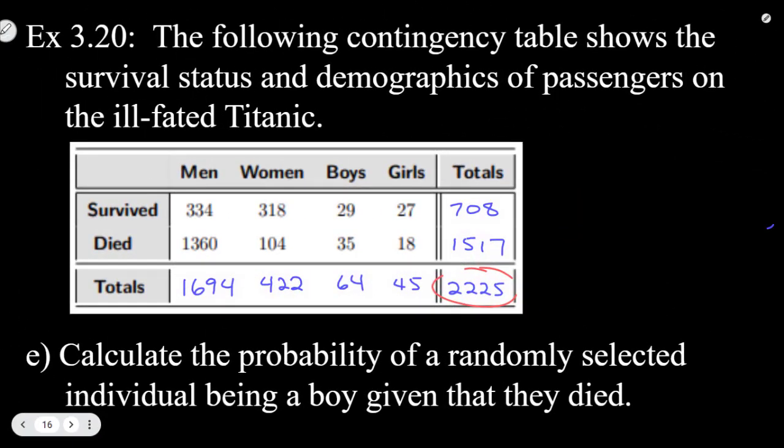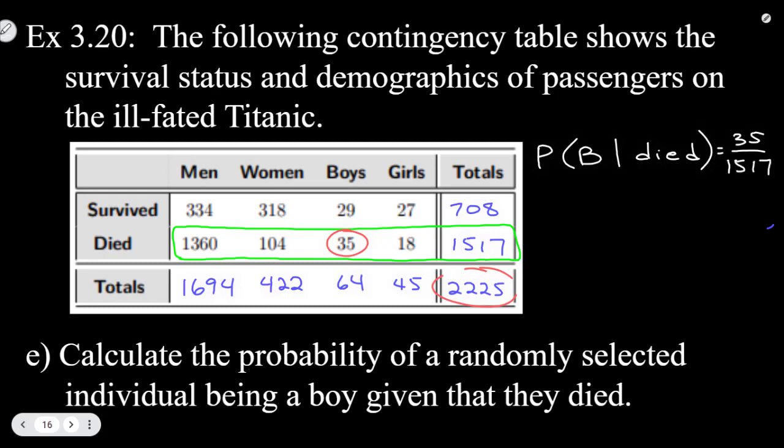For Part E, we are going to calculate the probability of a randomly selected individual being a boy given that they died. So probability of a boy given that they died. So we are only in this case considering people who died, so we're only looking at this group. And from that group, we're interested in how many were boys given that they died. So that's going to be 35 boys who died out of the total of 1517 people who died.